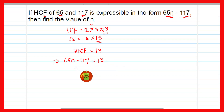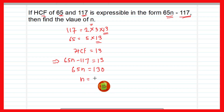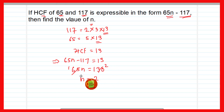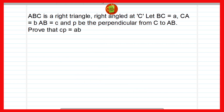So 65n minus 117 = 13. Taking 117 to the other side: 65n = 13 + 117 = 130. Therefore n = 130 ÷ 65 = 2, because 65 × 2 = 130. Therefore the value of n is equal to 2. The required value of n is 2.